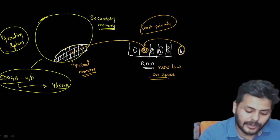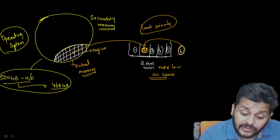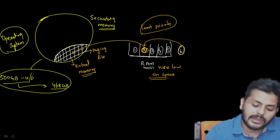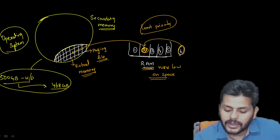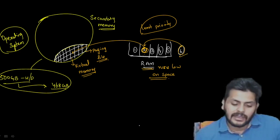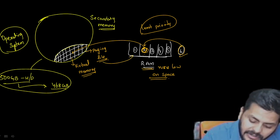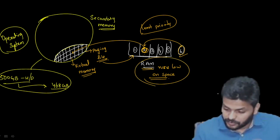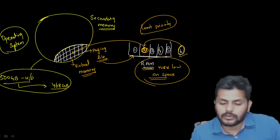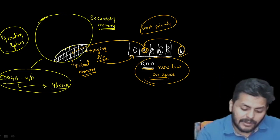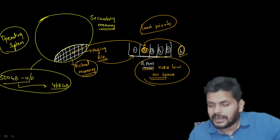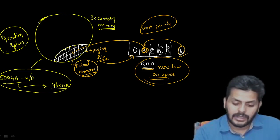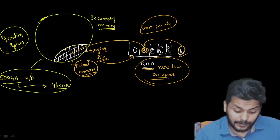Program two (least used) is moved to the paging file, and program six is given space on RAM. When task six is finished and RAM can accommodate program two again, it is brought back from the paging file to RAM. Moving data from RAM to the paging file and back eases the load when RAM runs low on space. This whole story comes into play only when RAM runs low on space.